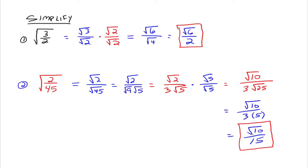So we have taken the square root of 2/45 and rewritten it as the square root of 10 over 15. Sometimes it's easier to work with the square root of 10 over 15 than with the square root of 2/45. That's the only reason we're walking through this process — to understand how to rewrite our radicals in a different form because it may be easier to play with them in that other form.